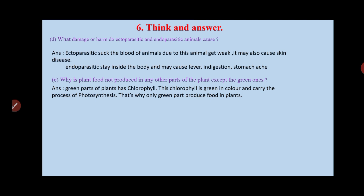The last question: why is plant food not produced in parts other than the green ones? Chlorophyll is the key factor in the production of food, and only the green parts of the plant — like leaves and green stems — contain chlorophyll. That is why only the green parts are useful in making food.